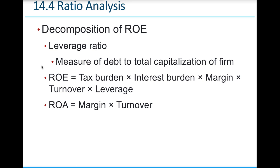The leverage ratio measures debt to total capitalization. Return on equity can also be expressed as: tax burden × interest burden × margin × turnover × leverage. Return on assets equals margin times turnover. This breakdown helps dissect return on equity to get a better idea of what is contributing to or detracting from it. If assets are underperforming, that lowers return on equity. Identifying which specific variable changed year over year pinpoints where the company has a problem.